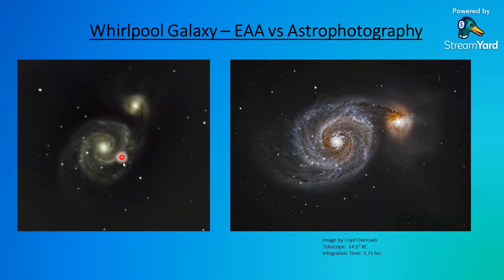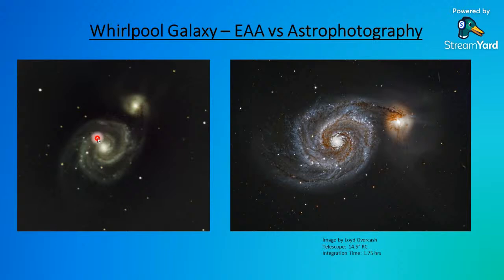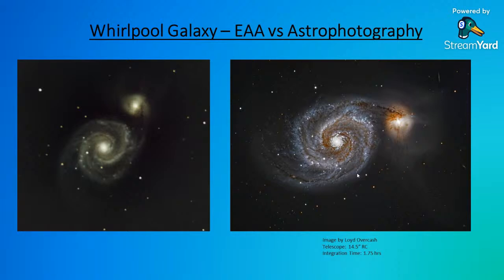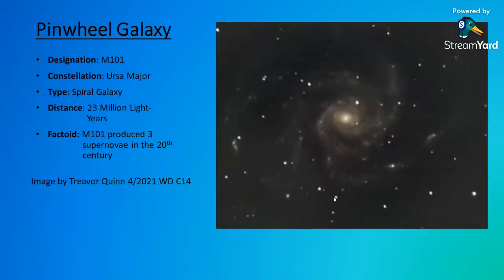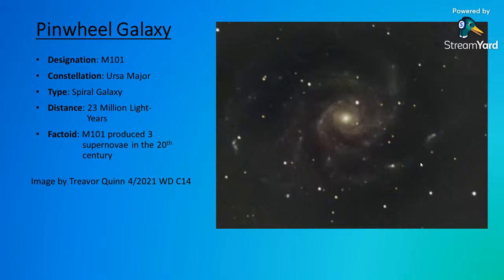Trevor's image versus the late Lloyd Overcash's spectacular astrophotography image — that's the difference between astrophotography and EAA. Trevor worked up his image in probably a good ten minutes, then just let it stack. Integration time was an hour and three-quarters for Lloyd's image, plus processing time. There's another one by Trevor — M101. You can see all these little wisps coming up with really short exposures, and you're actually seeing the structure of the galaxy.